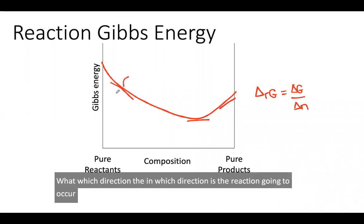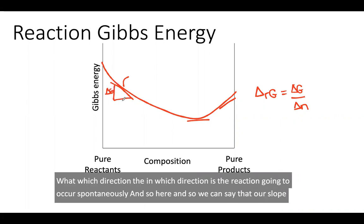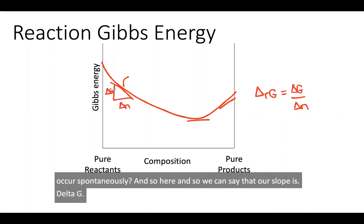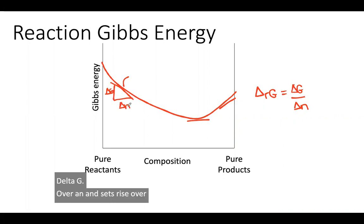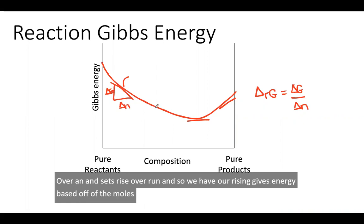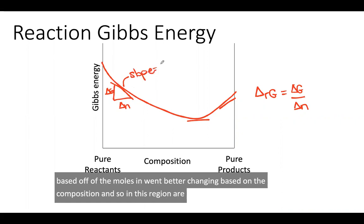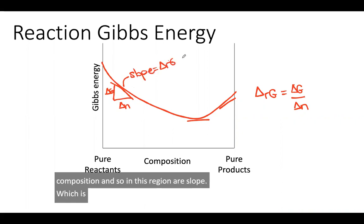And so we can say that our slope is delta G over n. And so it's rise over run. We have our rise in Gibbs energy based off of the moles that are changing based off the composition. And so in this region, our slope, which gives our reaction Gibbs energy, is going to be negative.